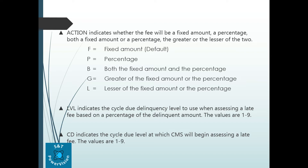The Action field indicates whether the fee will be a fixed amount, a percentage, both, or the greater or lesser of the two. By default it is a fixed amount — whatever is set up, that amount will be charged and posted to the given account. P means percentage — a fixed percentage of the current due amount will be charged. B means both the fixed amount and the percentage. G is the greater of the fixed amount or the percentage. L is the lesser of the fixed amount or the percentage.